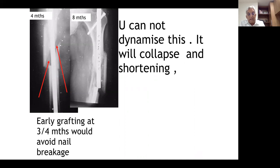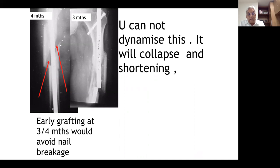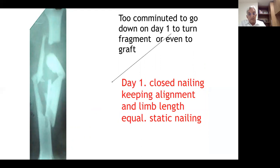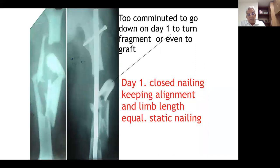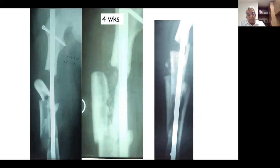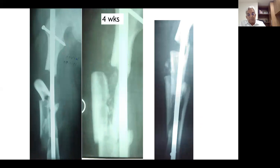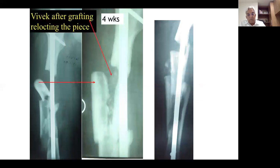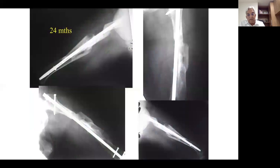Early grafting at three to four months avoids nail breakage and the fracture heals up very well. For a badly comminuted fracture, on day one close nailing keeping alignment and limb length in static mode is done. Later, the turned fragment was un-turned and bone grafting was performed at four weeks. After grafting and relocating the piece, the fracture started healing — at 18 months and 24 months it completely healed in normal length without deformity or shortening. This is my suggestion for comminuted fractures.